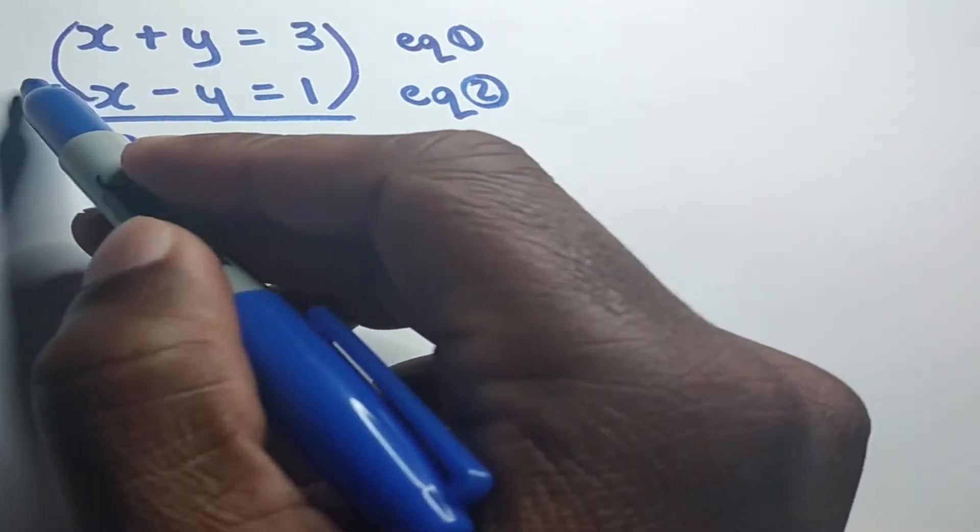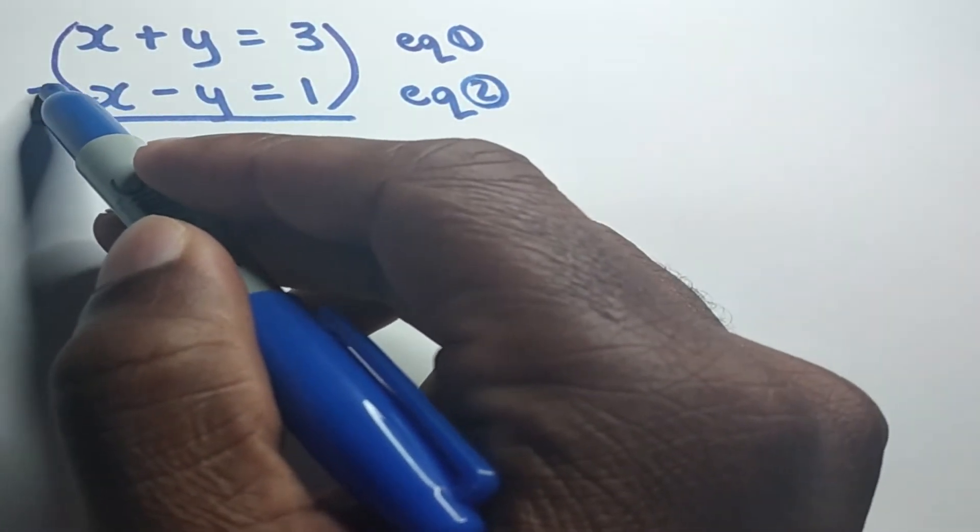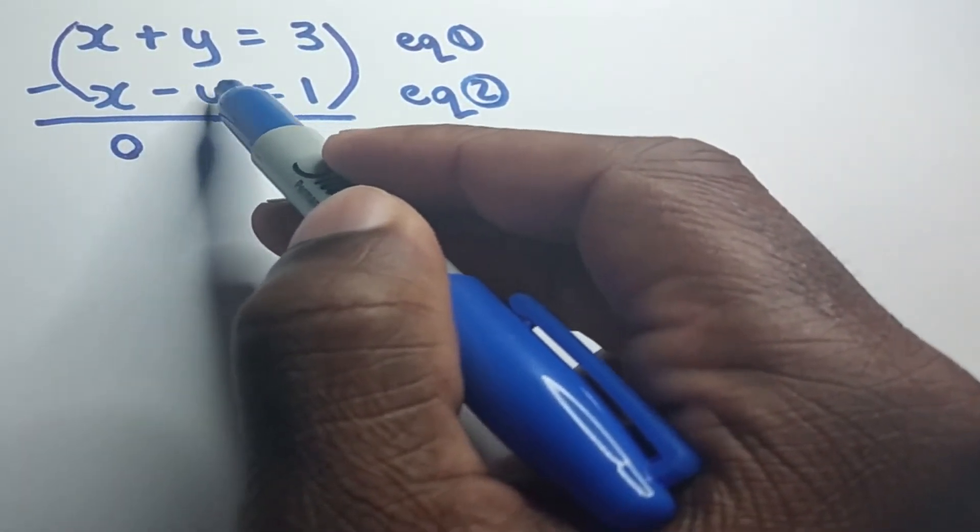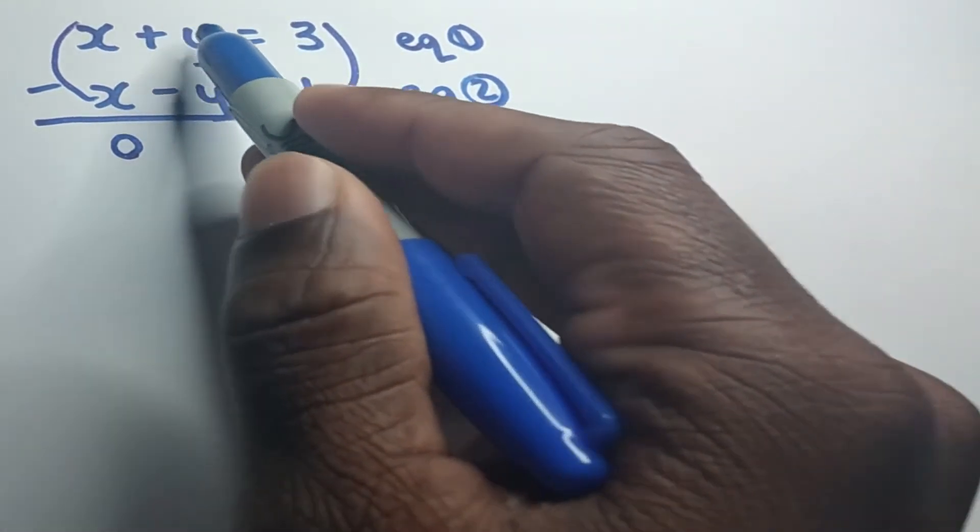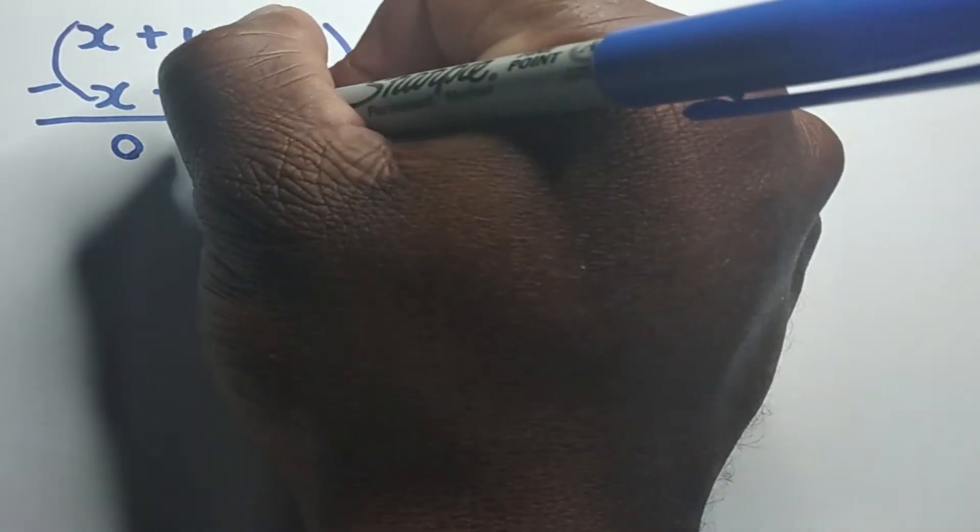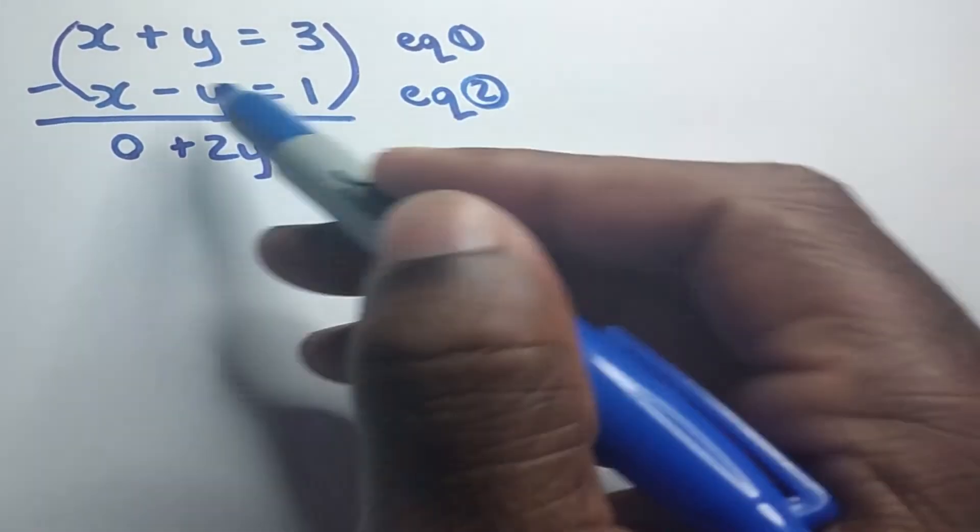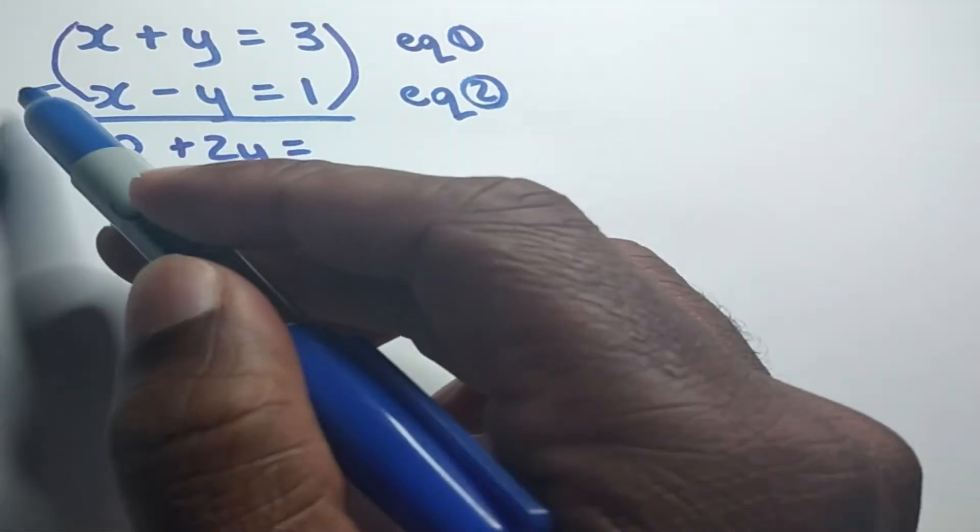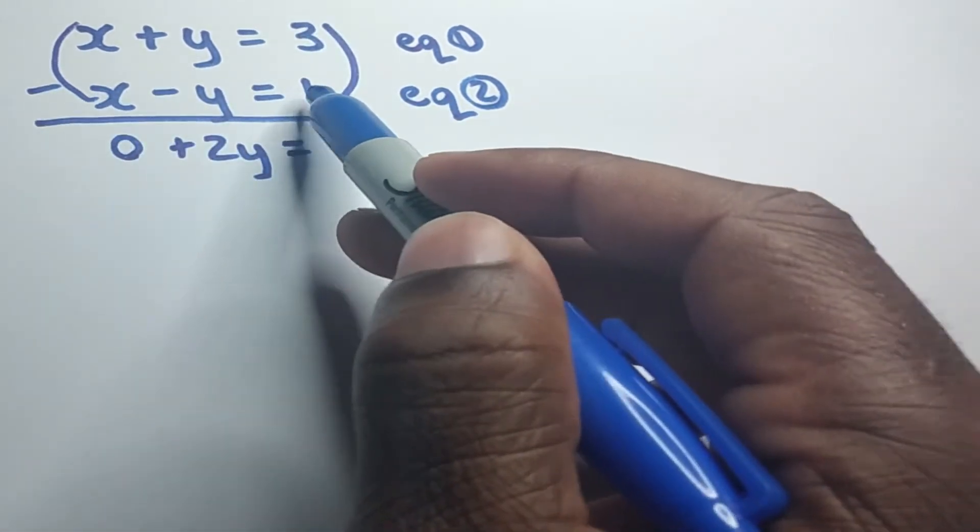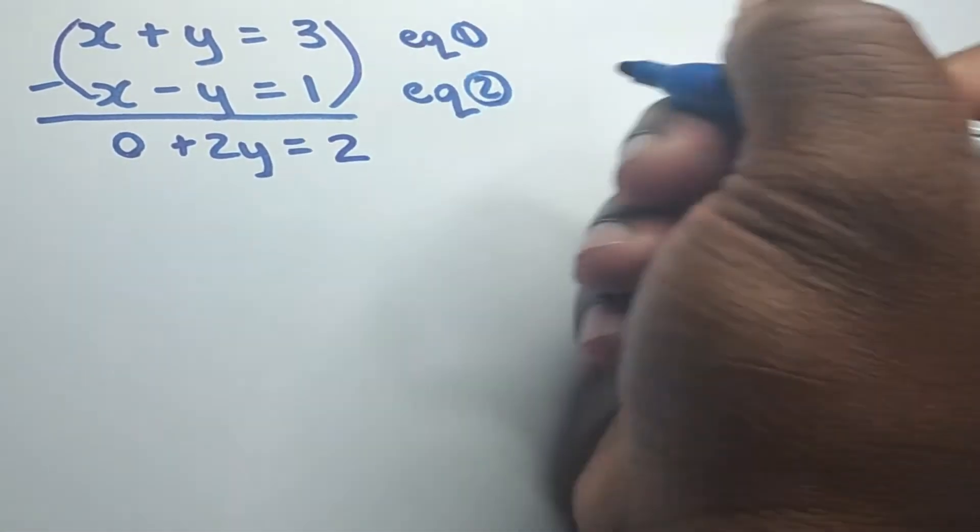And when we bring these two negative signs together, we'll end up with negative times negative y, that's a positive y. And y plus y will give us positive 2y is equal to 3 minus 1, which is 2.